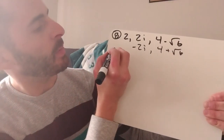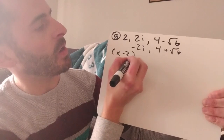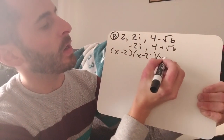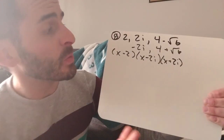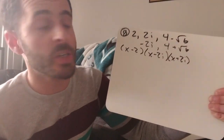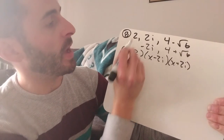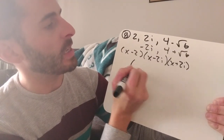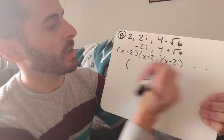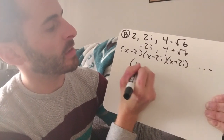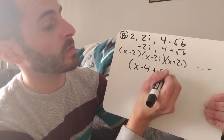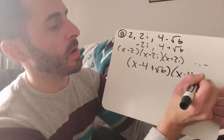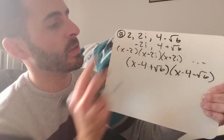The next step — change all the signs to go from roots to factors. Let's keep our conjugates together: (x minus 2), (x minus 2i), (x plus 2i) — and then continuing — (x minus 4 plus √6), change all the signs, and (x minus 4 minus √6), change all the signs.